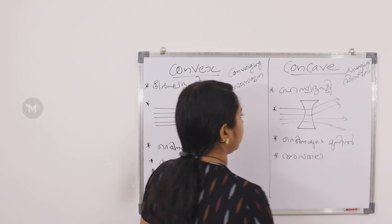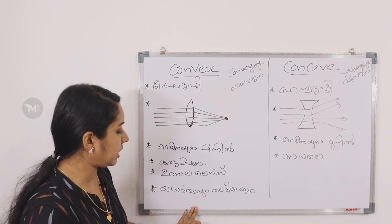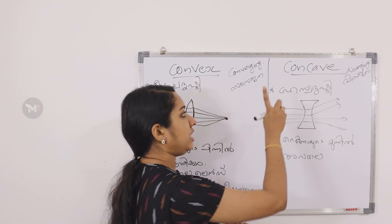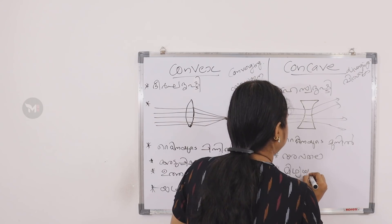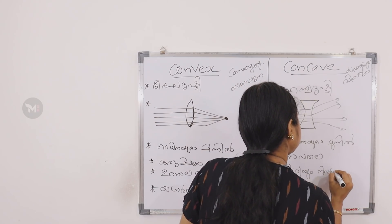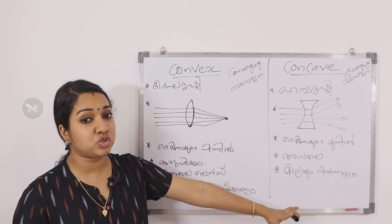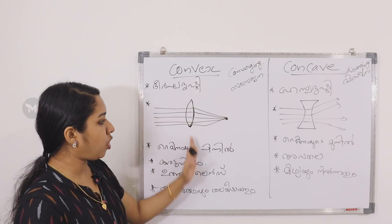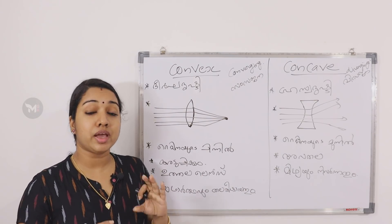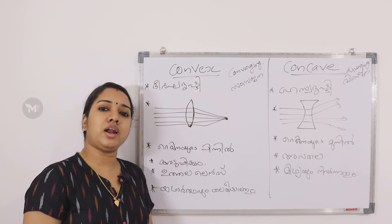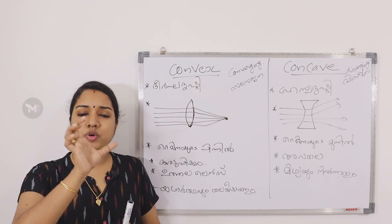The idea of convexity is the core concept here. If you compare the convex lens and the concave lens, you can understand the key difference. That is what we want to learn — the convex lens and the concave lens — and how to use a lens.